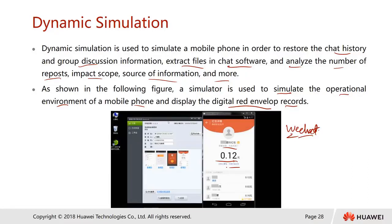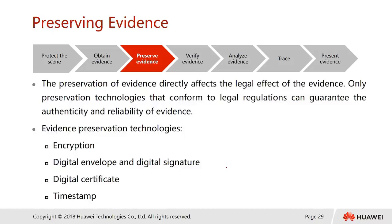Next is how to preserve the evidence. Preservation of the evidence directly affects its legal effects. Only preservation technologies that conform to legal regulations can guarantee the authenticity and reliability of the evidence. Evidence preservation technologies include encryption, digital envelopes, digital signatures, digital certificates, and timestamps.